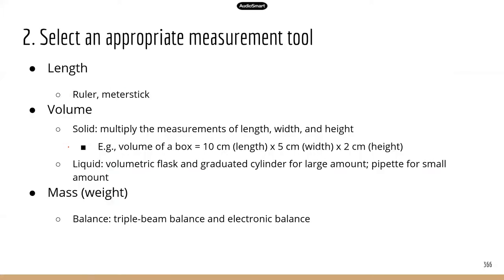The second topic is selecting the appropriate measurement tool. You need to know the common tools used in the laboratory to measure different things. To measure length, we use a ruler or a meter stick — the rulers ATI refers to are the smaller ones, usually about 15 centimeters. To measure volume, we do that differently for solid and liquid.